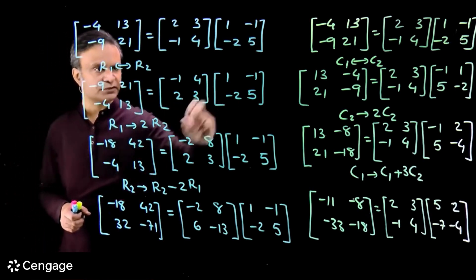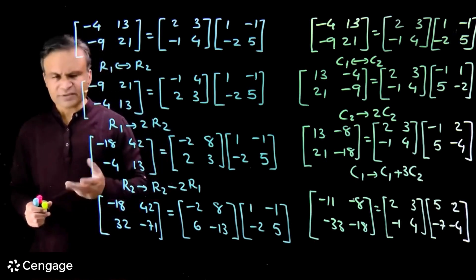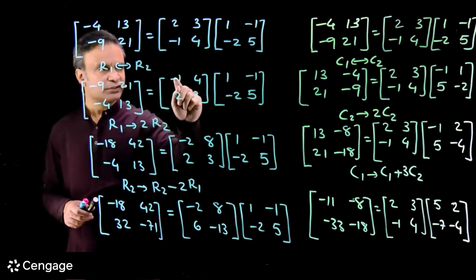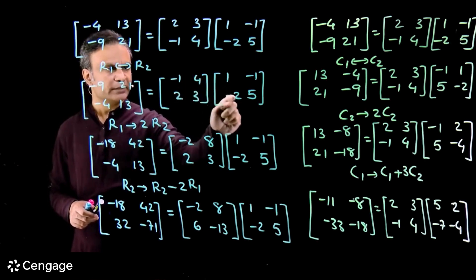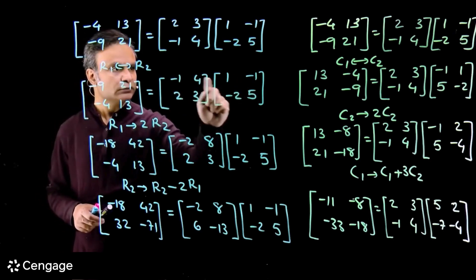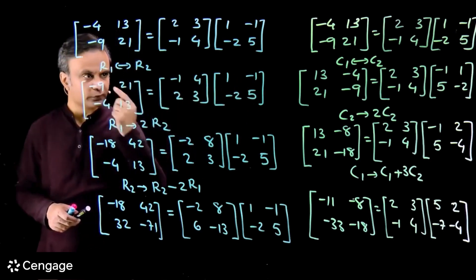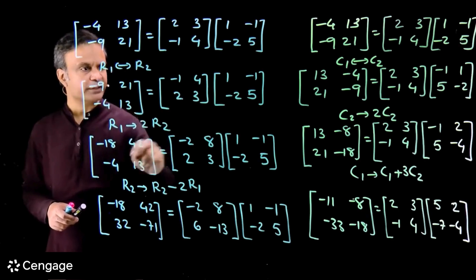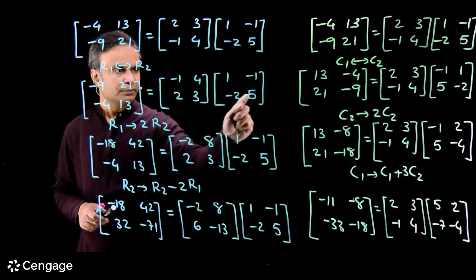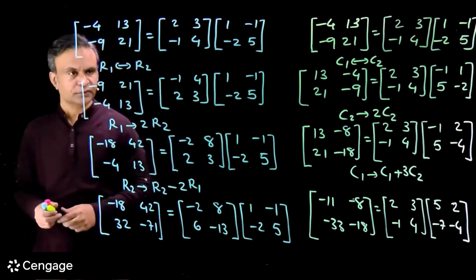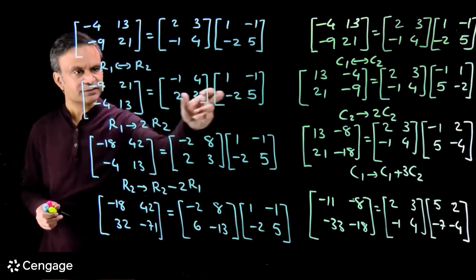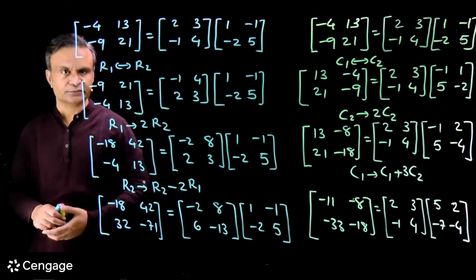I have this result. Now what is the magical thing? The multiplication gives: minus 1 minus 8 = minus 9, 1 plus 20 = 21, then 2 minus 6 = minus 4, minus 2 plus 15 = 13. So the product of these two matrices is equal to this matrix.